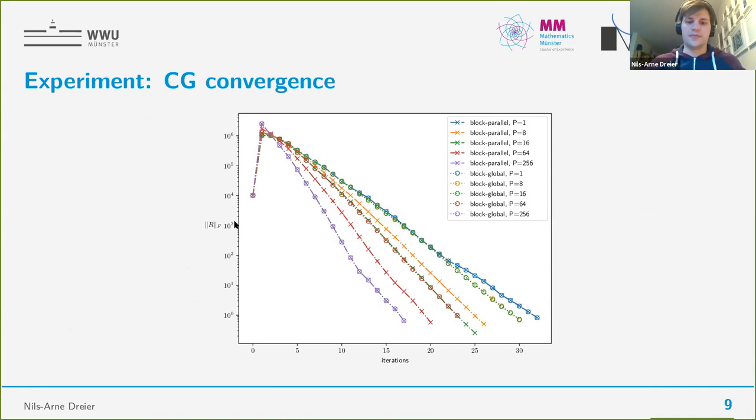I also did an experiment on that. What we can see here really good is that the block global method for p equals 64 has the same convergence speed as a block parallel method for p equals 16. I used 256 right-hand sides here. That result fits exactly the theoretical result that we have seen on the last slide.